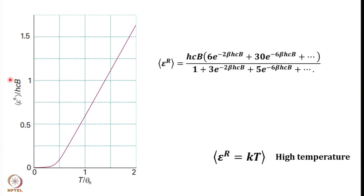A plot of mean rotational energy versus temperature is represented as the ratio of mean rotational energy with HCB versus T over theta_R. Initially, as long as the temperature is less than the rotational temperature, the mean energy value is not much, but it starts rising as temperature increases.